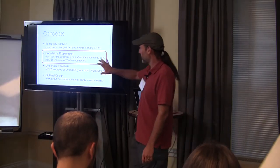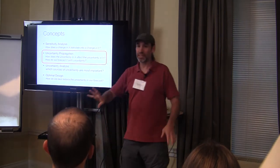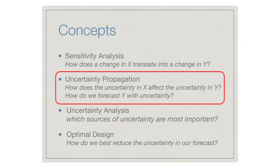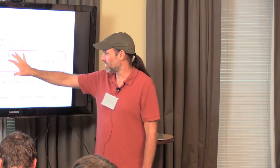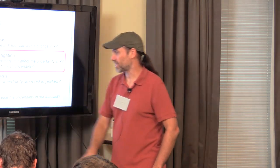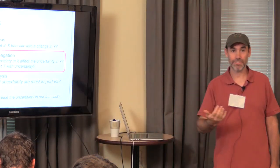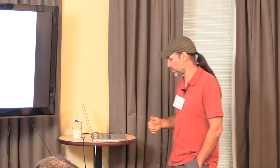I'm going to spend a disproportionate amount of time on uncertainty propagation because this is very much a course on forecasting, and this is a key concept. There is a deep connection between sensitivity analysis, uncertainty propagation, and uncertainty analysis. One of the values of uncertainty analysis is to think explicitly about that feedback loop — how we can use our forecasts to actually improve the way we make measurements and do monitoring.